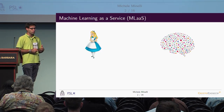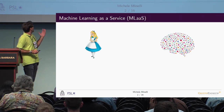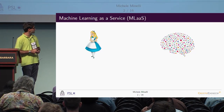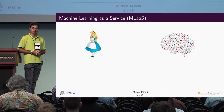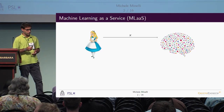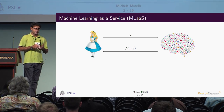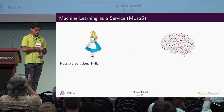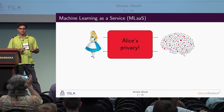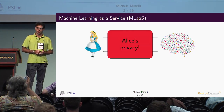In the usual scenario, we have a remote party that has a model — for example, a trained neural network — and a user, let's say Alice, wants this model to be evaluated on some input X that she holds. The easiest model of interaction is for Alice to send X to the remote party and receive the model evaluated on X. Of course, this works, but there is a huge problem with Alice's privacy because her data X is leaked to the remote party, and this might be sensitive information.